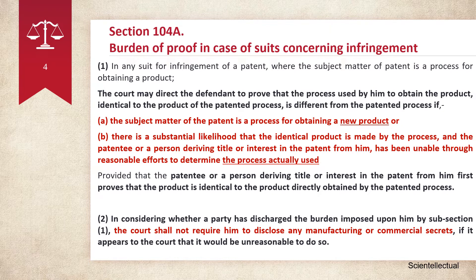This applies if: the subject matter of the patent is a process for obtaining a new product, or there is a substantial likelihood that the identical product is made by the process, and the patentee or the person deriving title or interest in the patent from him has been unable, through reasonable efforts, to determine the process actually used. When these conditions are met, the defendant needs to prove that the process used by him is completely different from the patented process, although the product is identical.